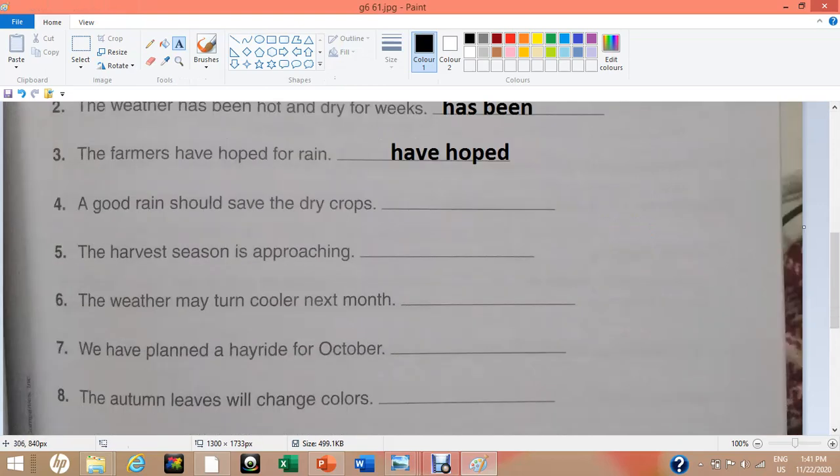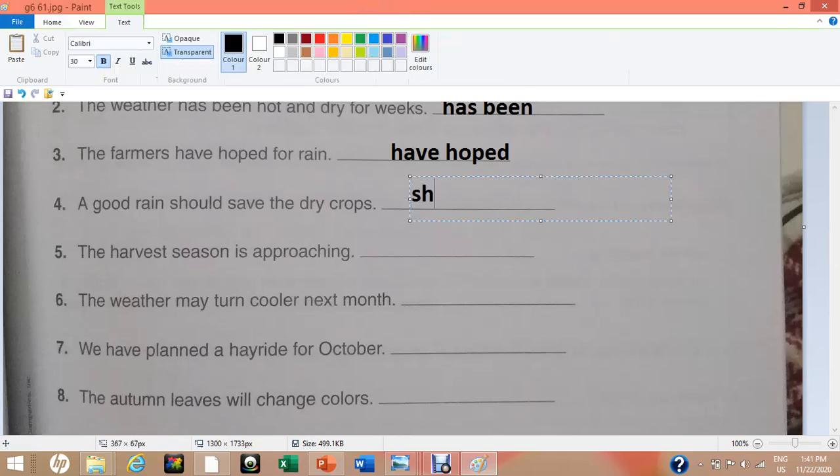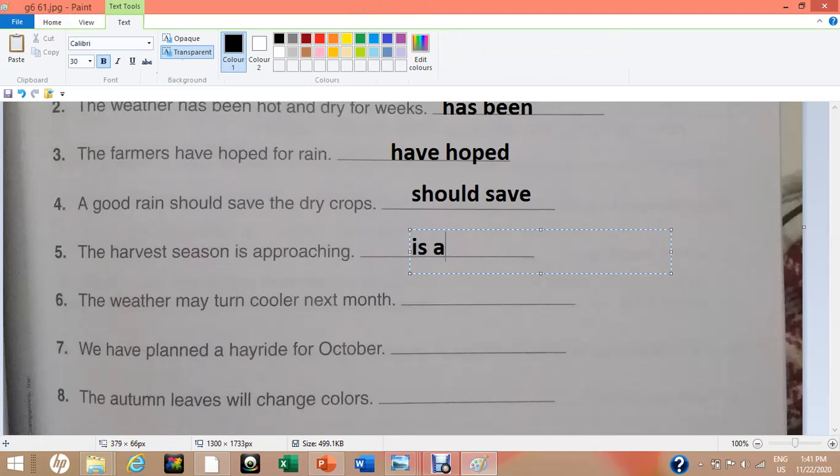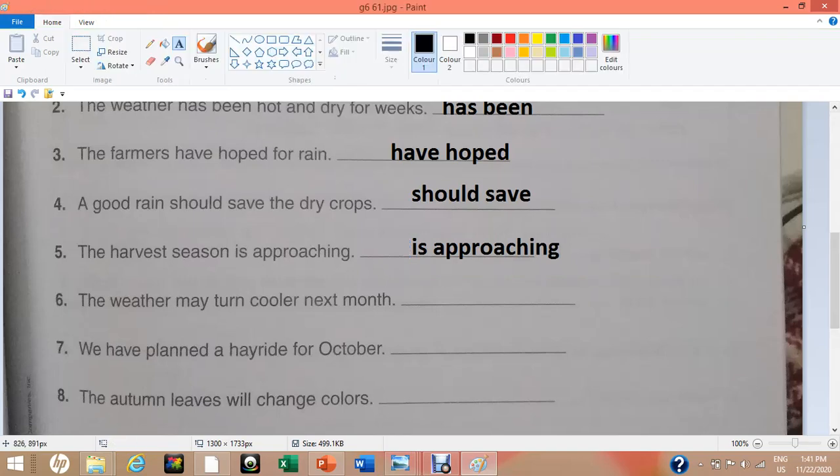Number 4. A good rain should save the dry crops. Here the verb phrase is should save. Number 5. The harvest season is approaching. The verb phrase is is approaching. The word is will be used as a helping verb while approaching is the main action verb.